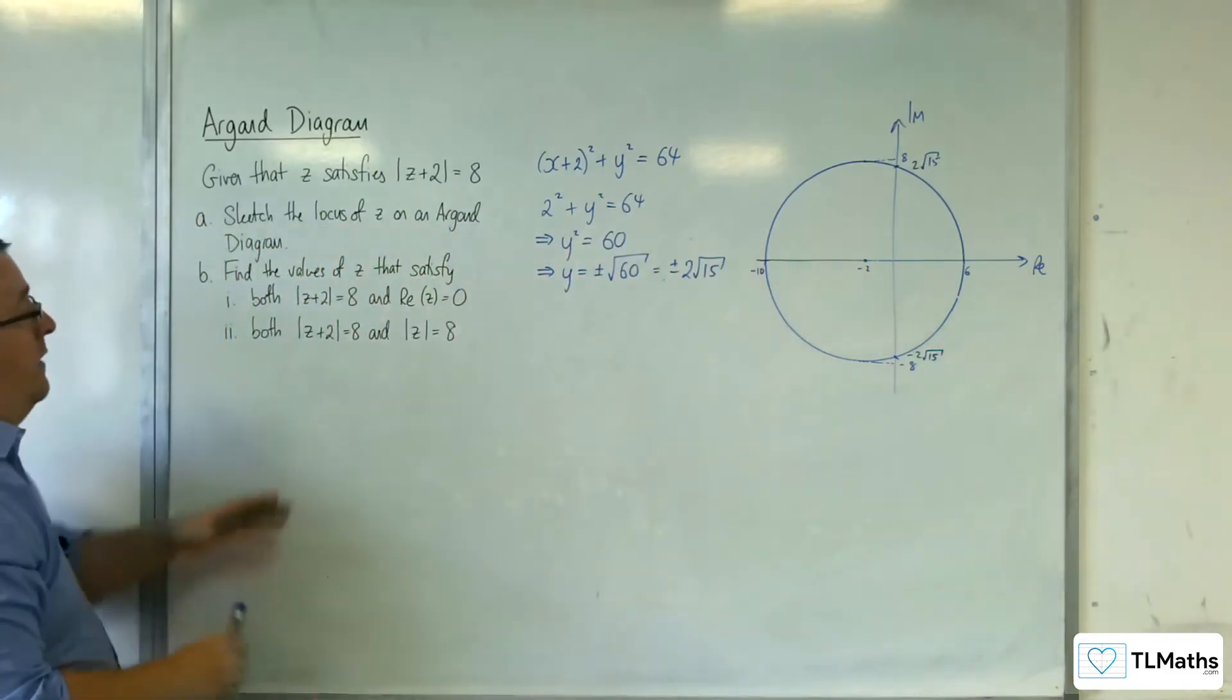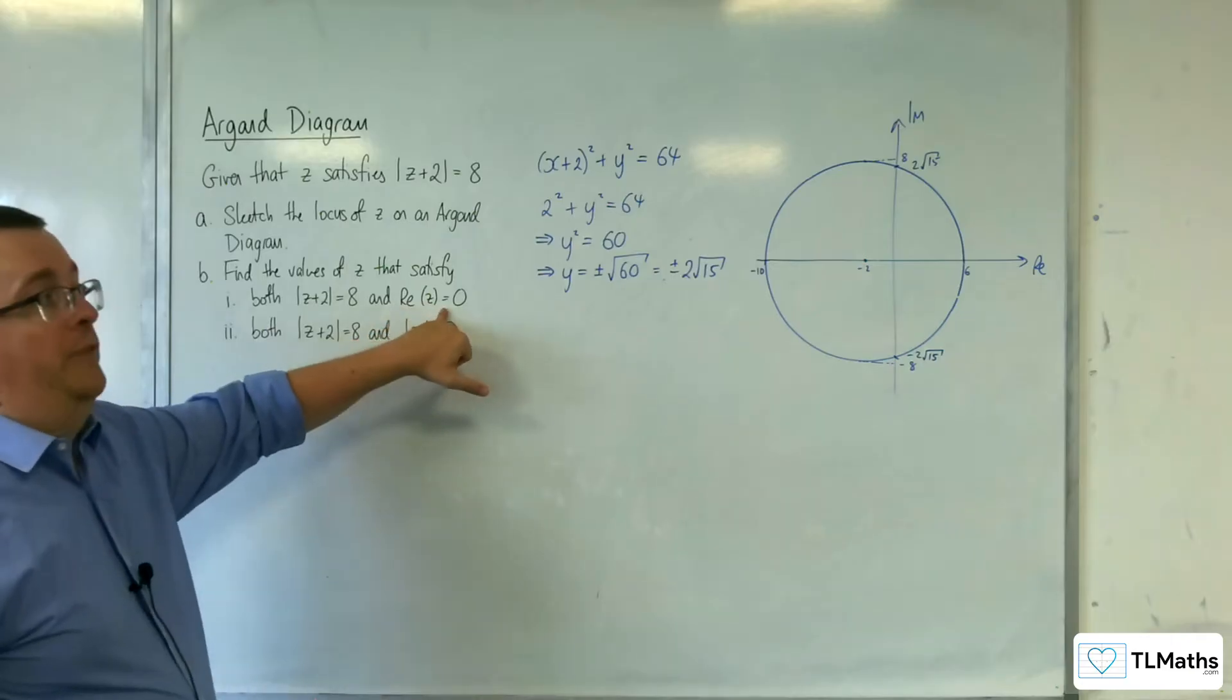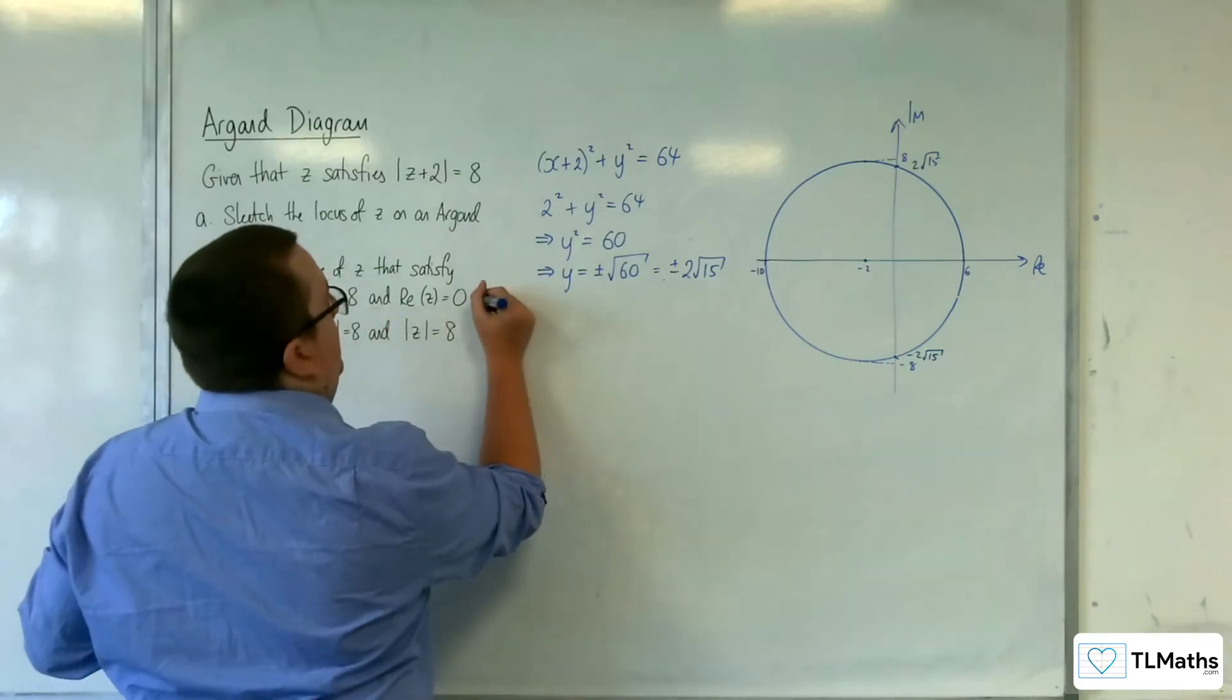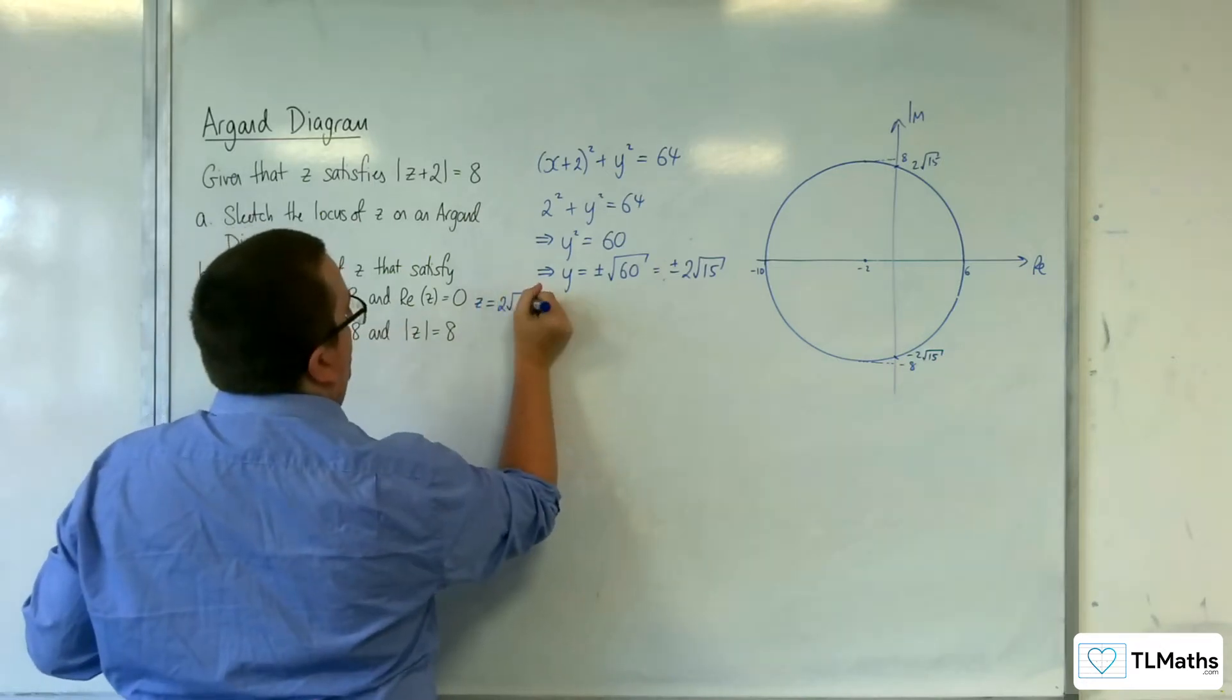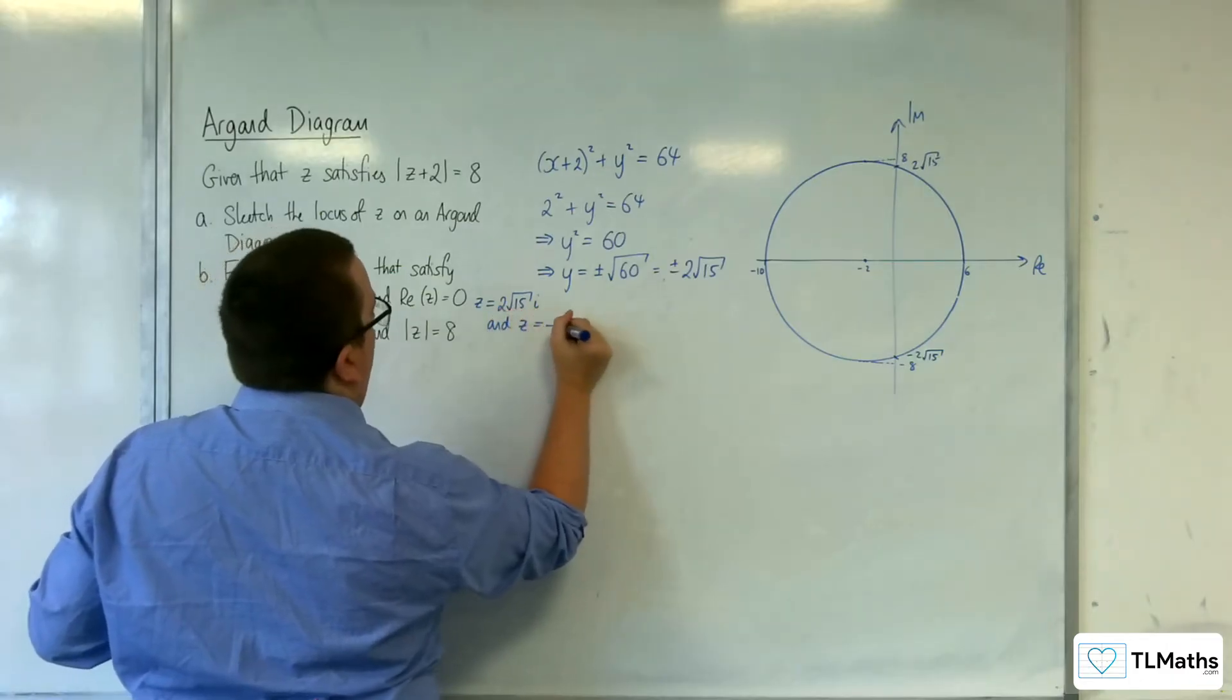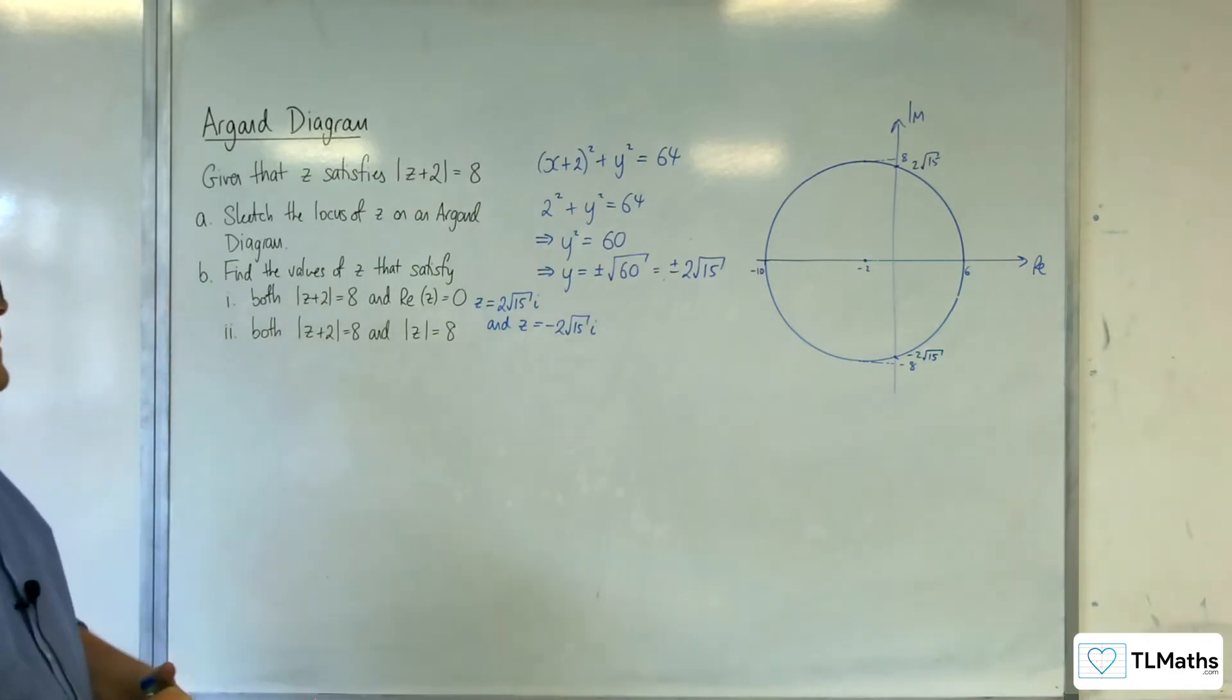OK. And so, that satisfies both the circle equation and that the real part of z is equal to 0. So, z equals, and it's going to be 2 root 15 i and z equals minus 2 root 15 i.